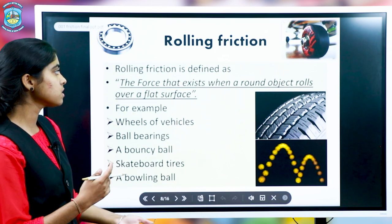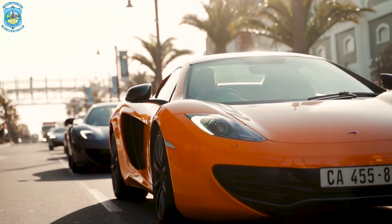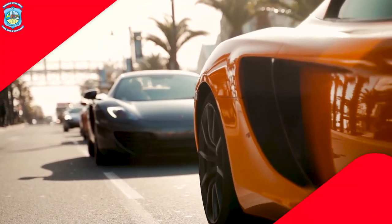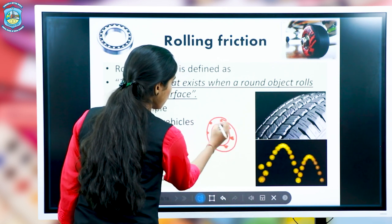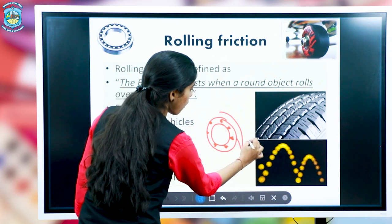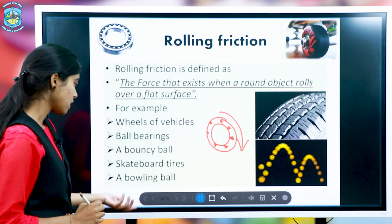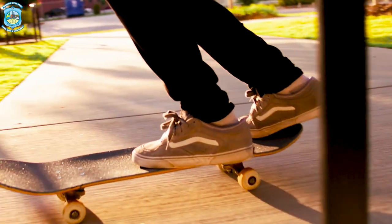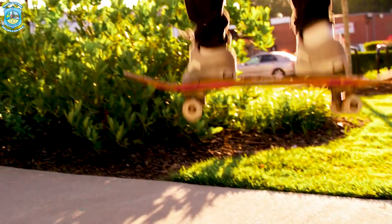Rolling friction is the friction experienced by a body when it is in rolling motion. Examples include wheels of vehicles. Have you observed why wheels are round? Ball bearings have a smooth outer surface. The tires of a skateboard are usually very small in diameter so that they can reduce friction. These are examples of rolling friction.